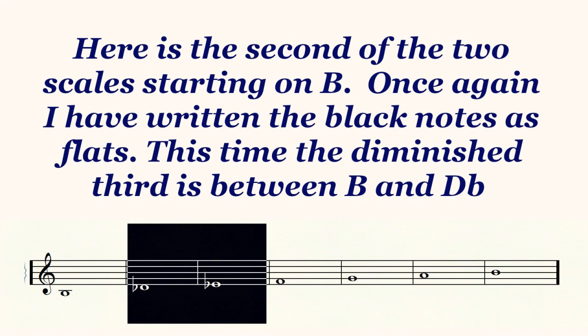Now let's examine the second of the two scales starting on B. Again, starting on B is arbitrary because we can start on any note in the system. Once again I have written the black notes as flats. This time the diminished third is between B and D flat.